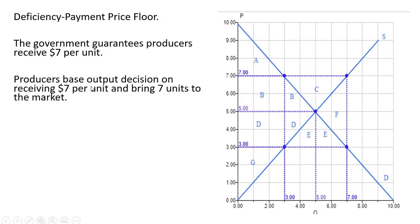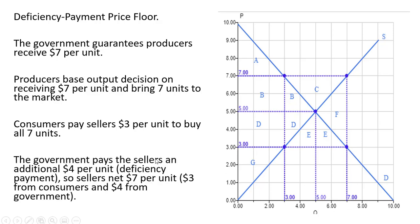Producers base their output decision on receiving $7 per unit and bring 7 units to the market. So at a price of $7, the quantity supplied is 7 units. Consumers are going to pay sellers $3 per unit to buy all 7 units. So at $3 per unit, consumers would buy all 7 units. The government then pays sellers a deficiency payment. The difference between 7 and 3 is $4. So sellers net $7 per unit. $3 of that comes from consumers. $4 of that comes from the government.